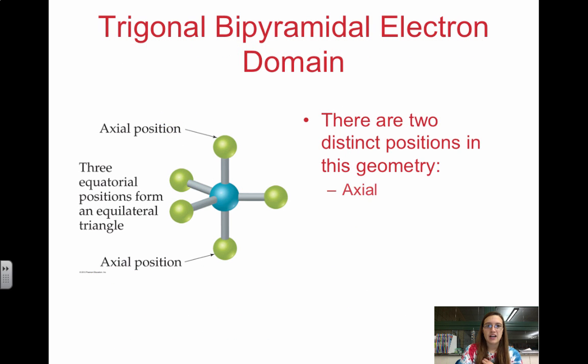Then we have the trigonal bipyramidal electron domain. It's important to distinguish between the two positions within a trigonal bipyramidal. We have the axial—think about it like an axis. The axial positions, and then the equatorial—think about like the equator. We have these two distinct positions in the trigonal bipyramidal, and it's important to know the difference because that is actually dependent on where we take electrons from.